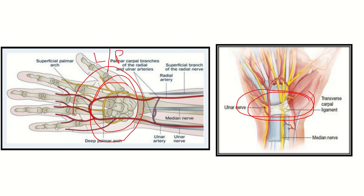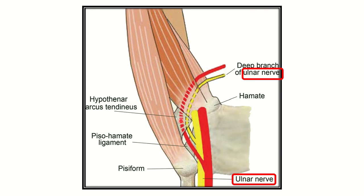This is the lateral or radial side, and this is the medial side — you can also call it the ulnar side. Here we can see this point is the ulnar artery and this is the ulnar nerve. So we can see the ulnar artery lies on the lateral or radial side compared to the ulnar nerve. In another picture we also see the ulnar nerve and the ulnar artery, where the ulnar artery lies on the lateral side.